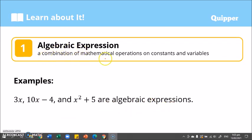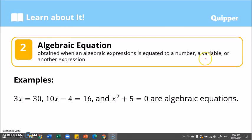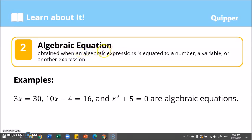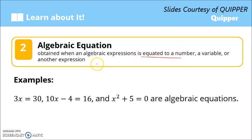Again, an algebraic expression is a combination of mathematical operations on constants and variables. Now, how about an algebraic equation? What is the difference between an algebraic equation and an algebraic expression? Well, an algebraic equation is obtained when an algebraic expression is equated to a number, a variable, or another expression. Take note — equated to a number, a variable, or another expression. So from the word 'equation,' meaning we have an equal sign.